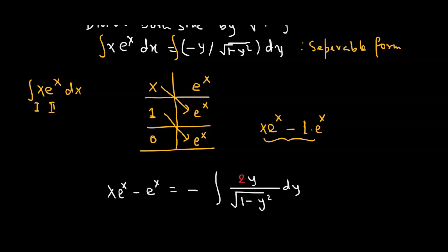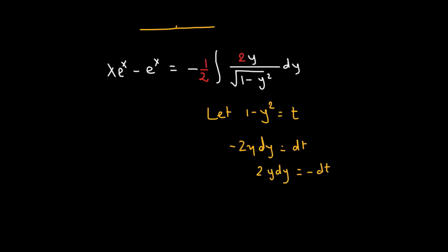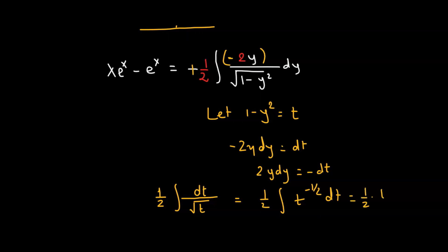Here we are going to multiply by 2 and divide by 2 so that we can make a substitution. Let 1 minus y squared equal some variable t and differentiate both sides, giving us negative 2y dy equals dt, or simply 2y dy equals negative dt. Our integral now becomes half times the integral of negative 2y dy over square root of 1 minus y squared, which is simply dt divided by square root of t, which is t raised to the power of negative half dt. Integrating gives half times t raised to the power of half divided by half, which simplifies to t raised to the power of half.